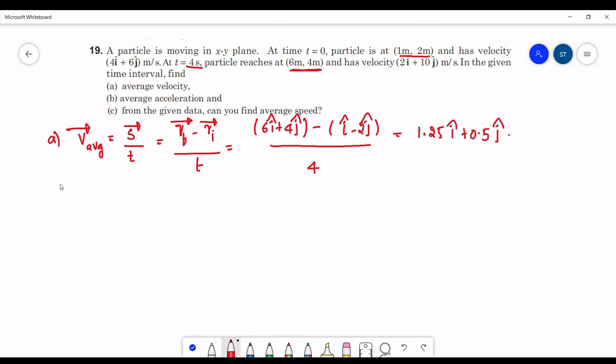Second part, average acceleration. Average acceleration is overall change in velocity by overall time taken. This is final velocity minus initial velocity.